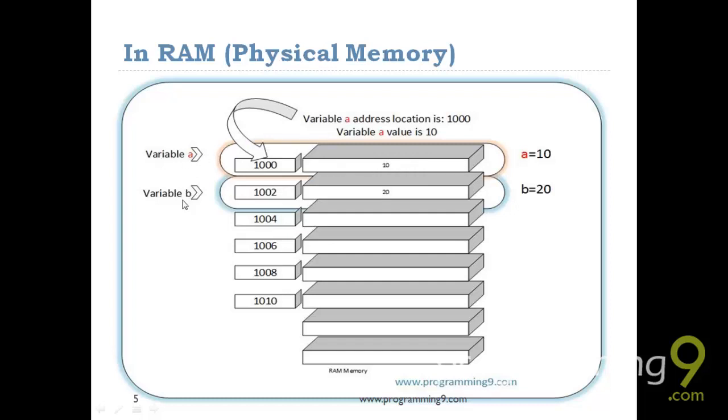Variable a has taken two bytes of memory, variable b has taken two bytes of memory. In those first two bytes of memory I have taken 10 as an integer value, and in the second variable b I have taken 20 as the variable value. I stored these values in a particular location called thousand and one thousand two.